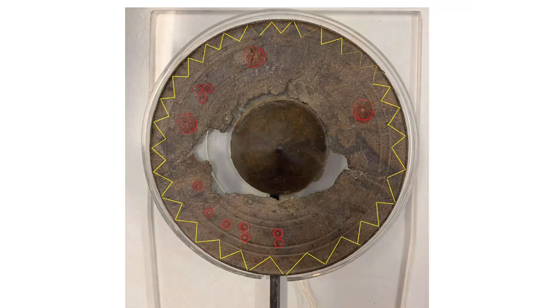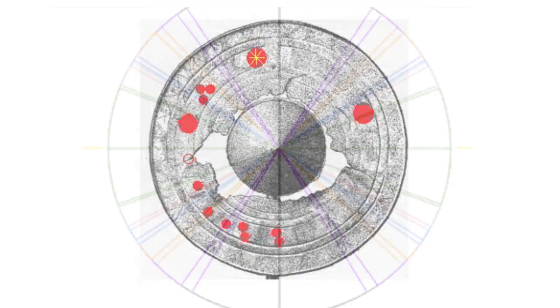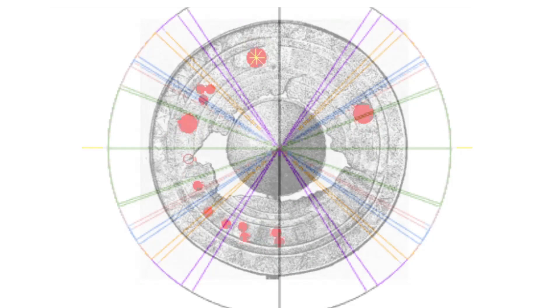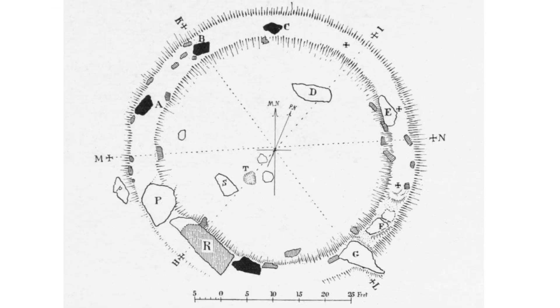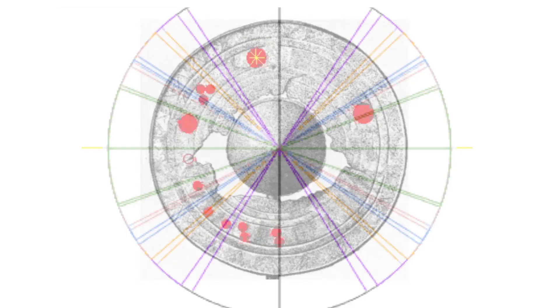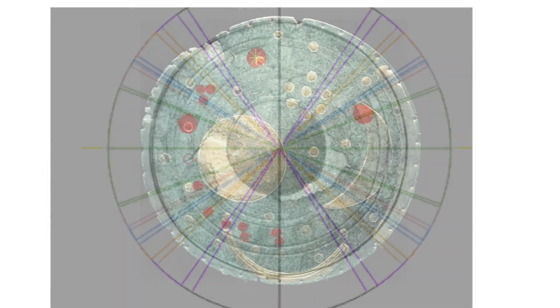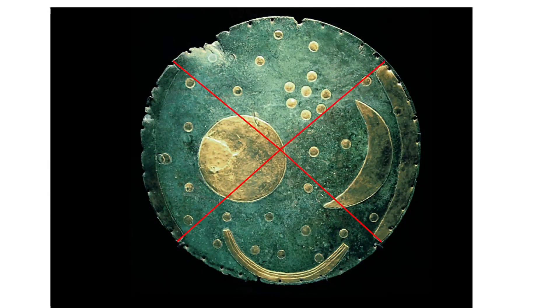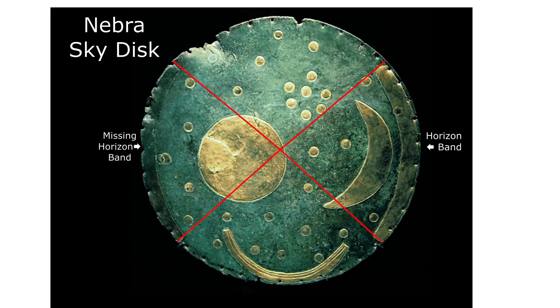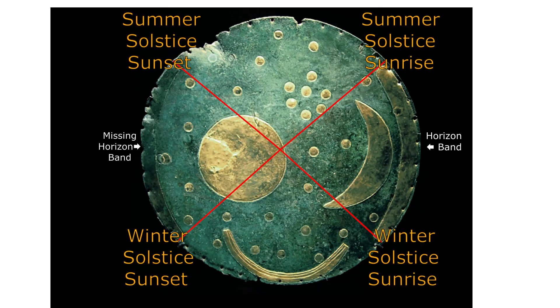Could the dots encode important rising or setting positions around the arc of the disk, in much the same way stones and features of a site can be set out on the ground to create alignments? This would be similar to the proposed function of the horizon bands on the Nebra sky disk, that mark out the span of rising and setting positions of the solstices for the location of its discovery.